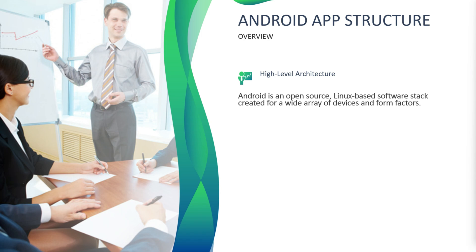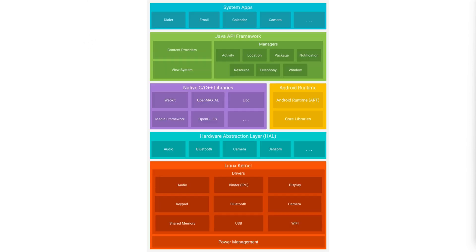Now let's move on to Android application structure. At a high level, Android architecture is composed of mainly four layers: the Linux kernel, libraries, Android runtime, and application framework. At the top layer of the Android architecture are the system applications — these are the applications that come pre-installed on your device such as the phone dialer, email client, and messaging application.